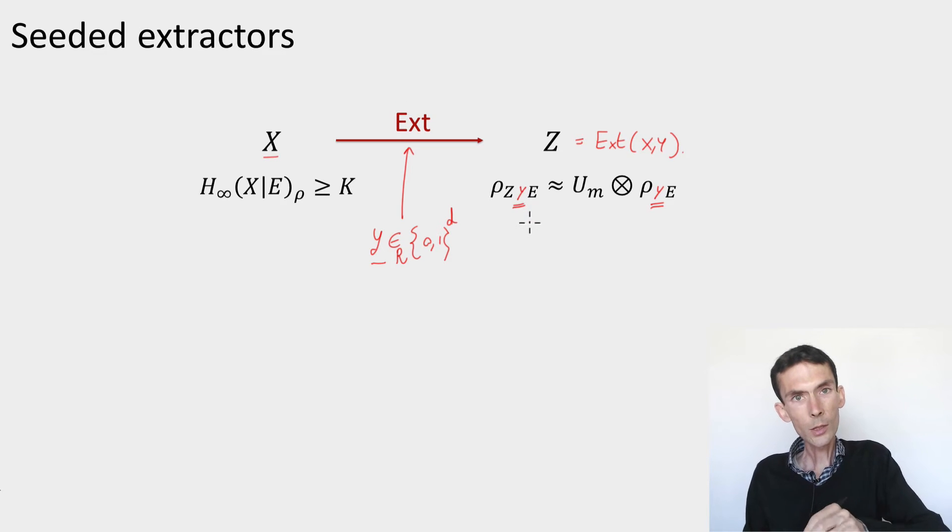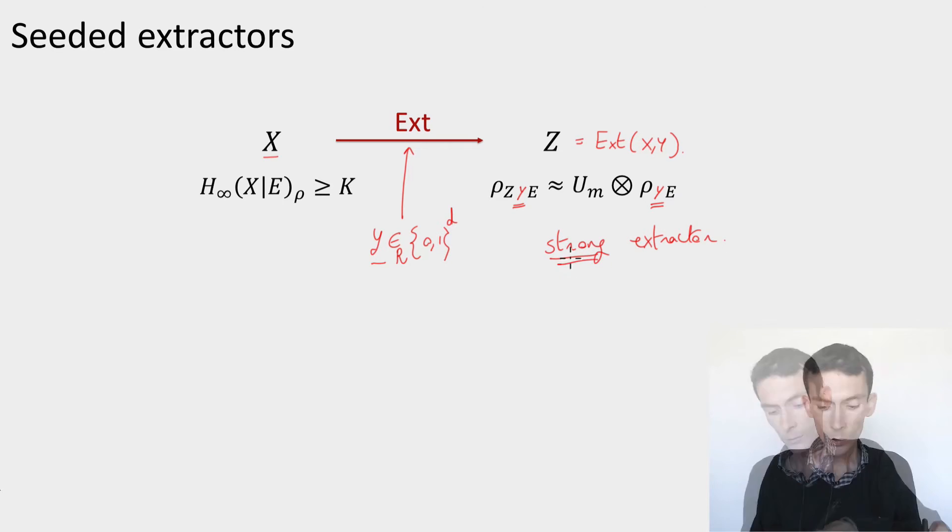So this condition is the condition that's usually called strong extractor. It's strong because the eavesdropper also has access to the seed. But in this whole class we'll only be talking about strong extractors, never the ones that don't have access to the seed and are called weak extractors. So sometimes we'll just say extractor, meaning strong extractor.